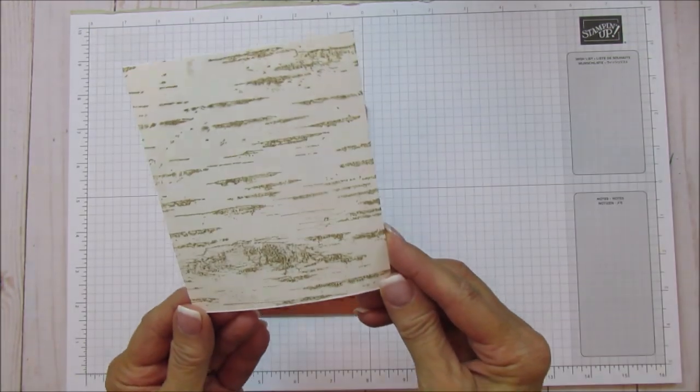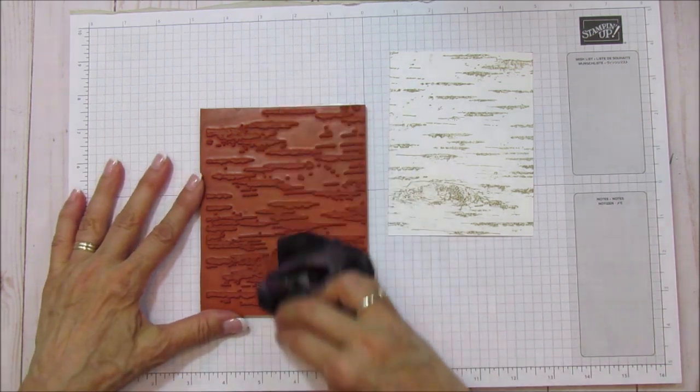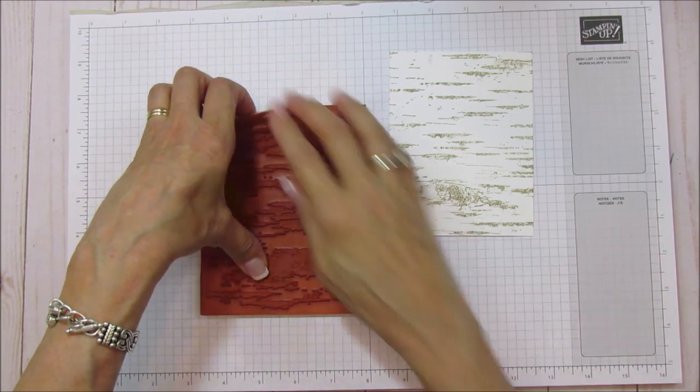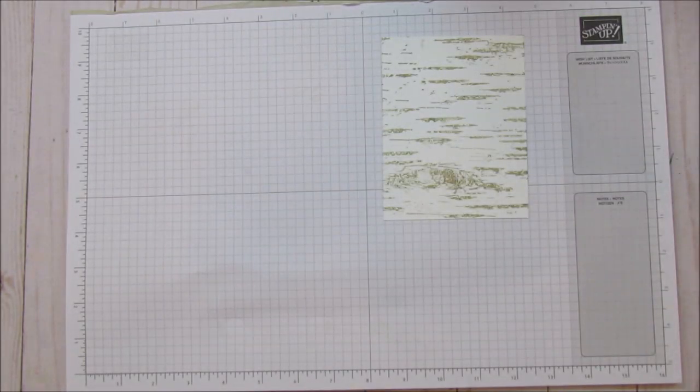This is such a nice background stamp. It's really, really pretty. So look at that. It looks just like a birch tree. So I'm going to wipe this up really quickly and then put it back in its case so I don't have ink everywhere. And then we will go on.